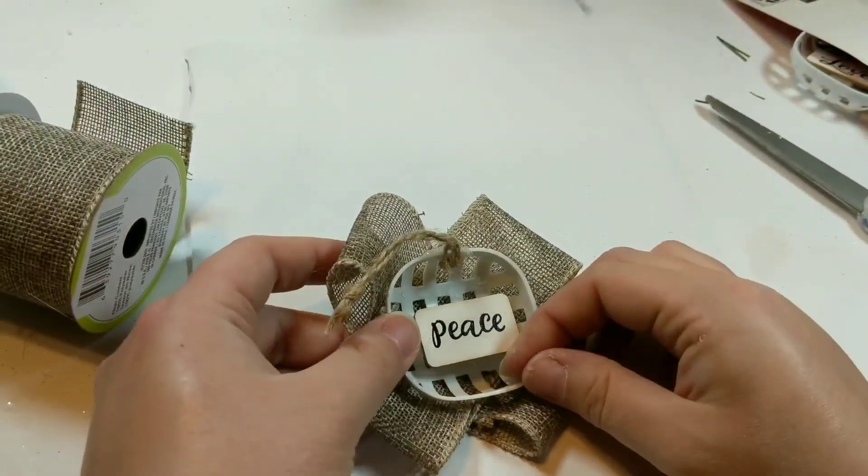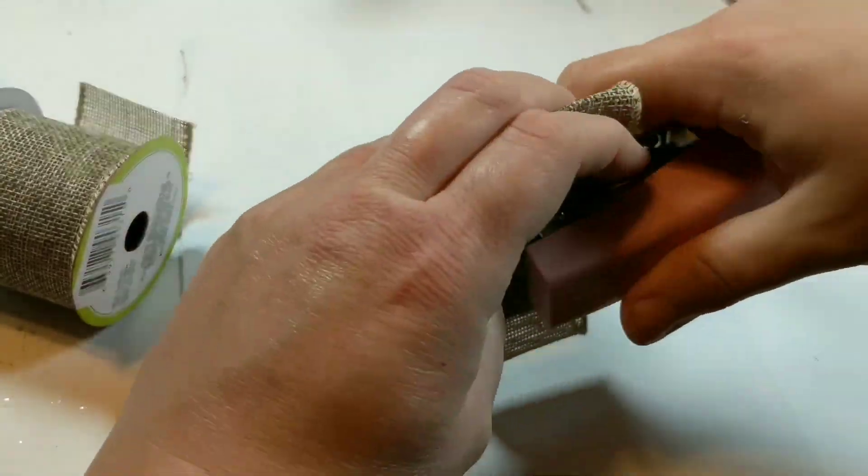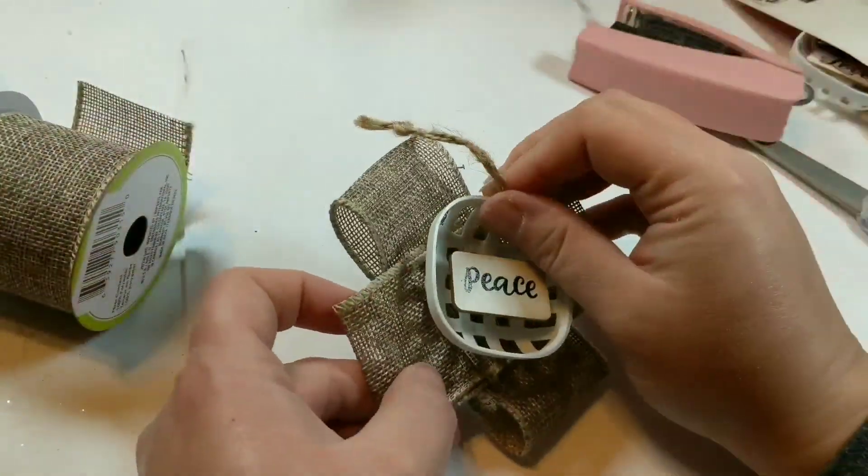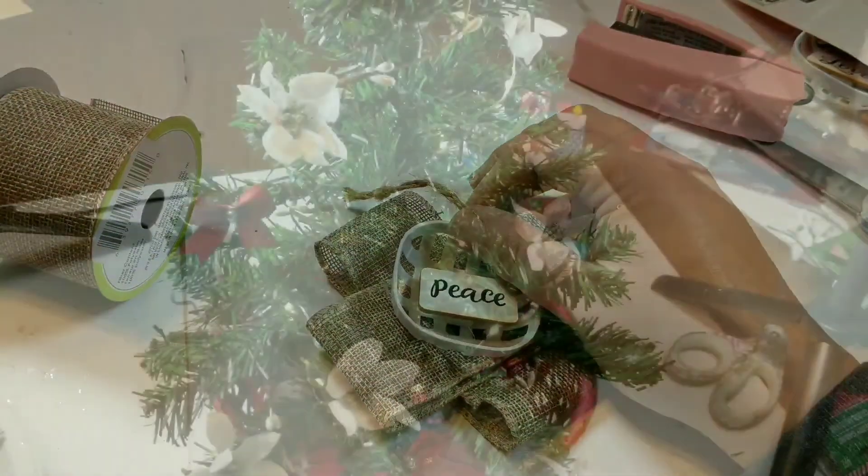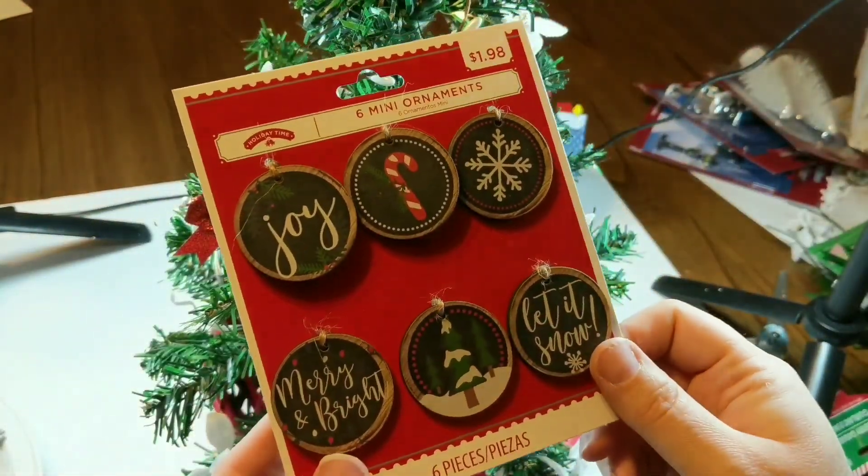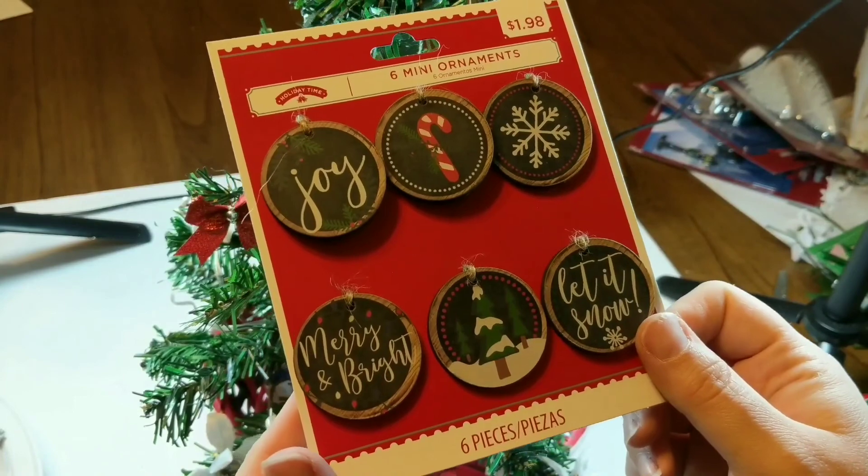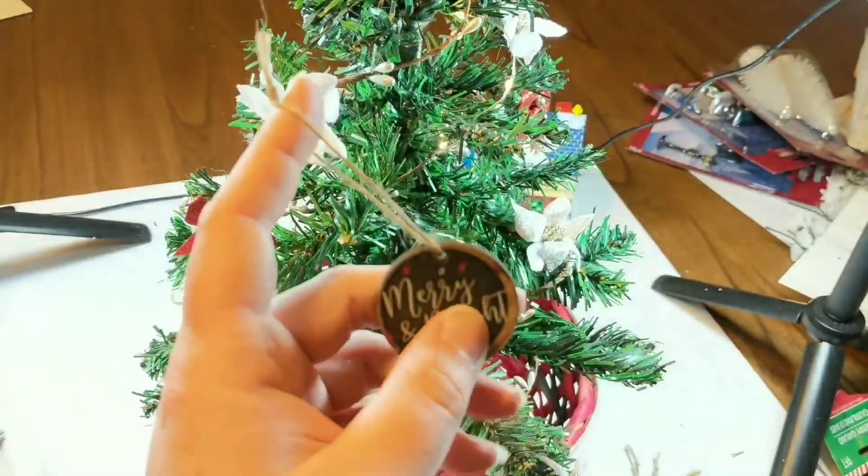And then I'm going to jimmy rig this together because I'm terrible at bows. I'm using a stapler to kind of pin this together and then I'm just going to hot glue this ornament in the center. And that is going to be my top piece for this little rustic tree.